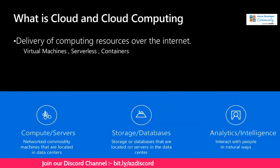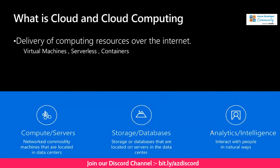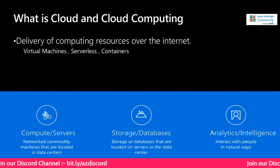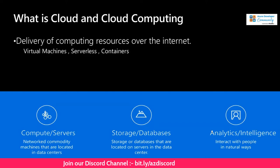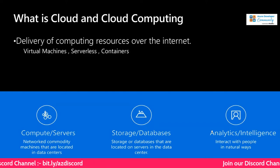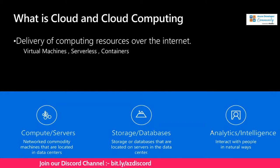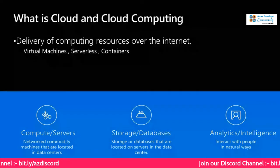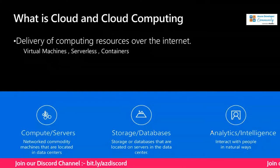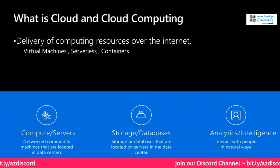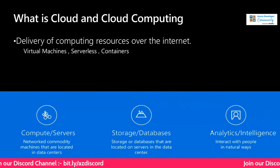Compute servers are network commodity machines located in distant data centers — hosted by tech giants like Microsoft, which has its own data centers, with a fourth new one coming up in India. There are storage, databases, analytics, and intelligence resources on those servers. You can leverage any computing resource over the internet. To a layman, cloud can mean storing things remotely like Google Drive's 15 GB, but cloud is much more beyond just storage.